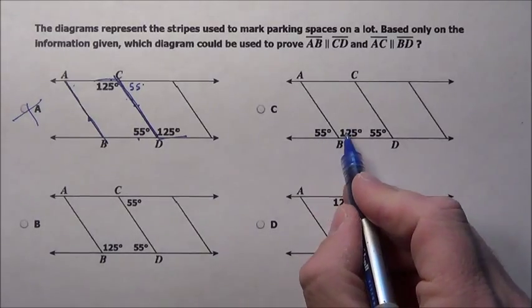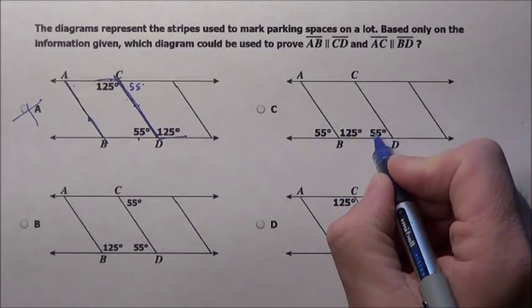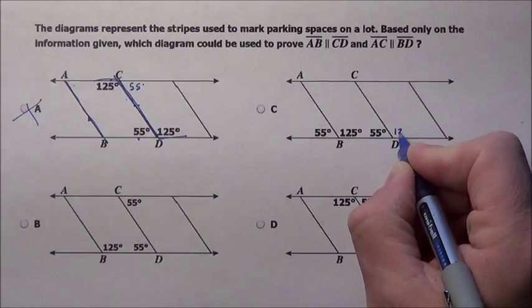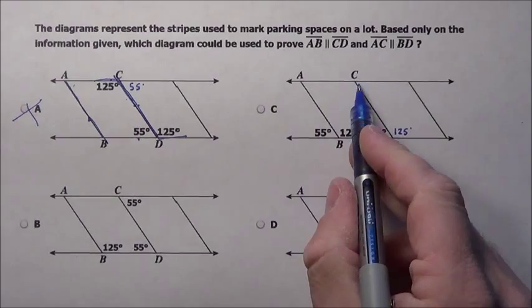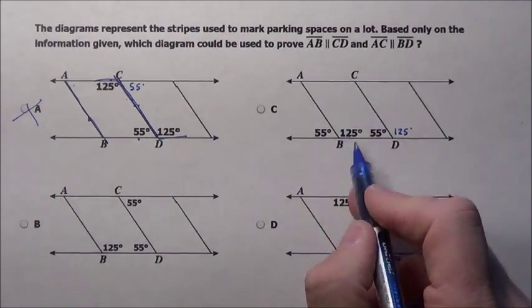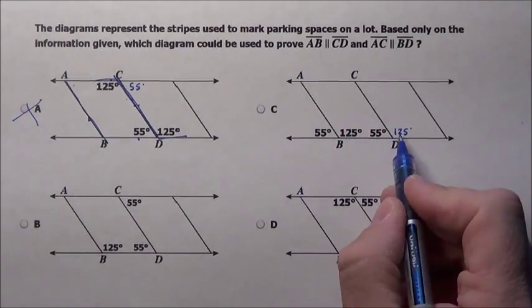Now this actually gives some markings here on this part and this part. If this is 55, what do you and I know this side is? We know this has to be 125 right here. Now I don't know anything about up here because I don't know that that and that are parallel. I would love if they were, but I don't. So I'm going to fill this in.